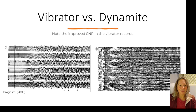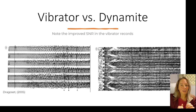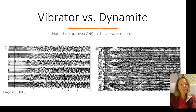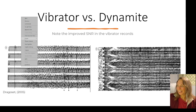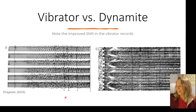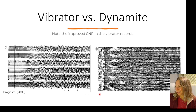Both of these datasets were acquired in the same area of southeast Montana. On the left-hand side you can see the correlated vibrator records, and on the right-hand side the dynamite shot records. One thing you'll notice is there's an improved signal-to-noise ratio in the vibrator records. You can see some slightly more coherent reflections — A, B, and C — kind of down here, and those are much harder to pick out in the dynamite-acquired data.